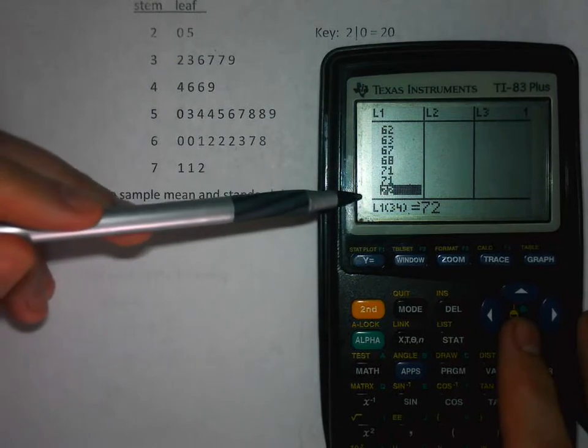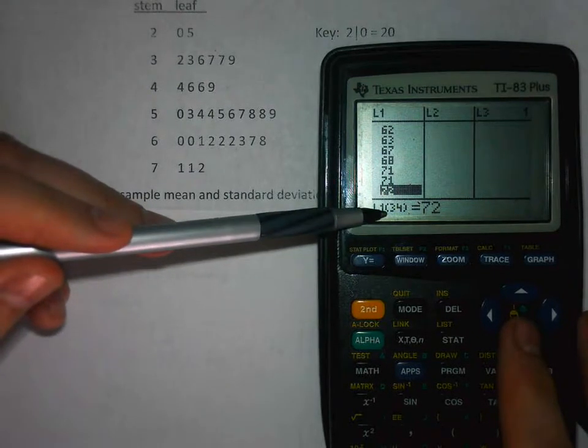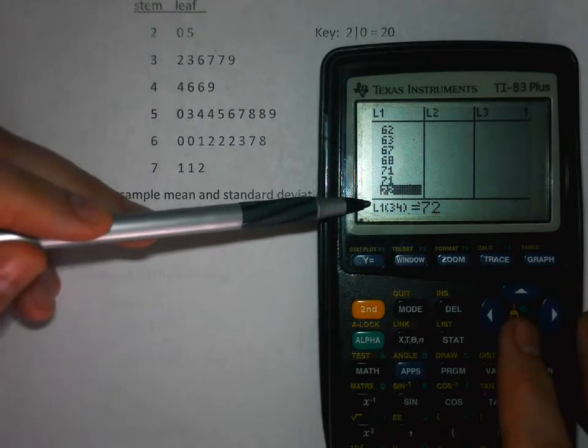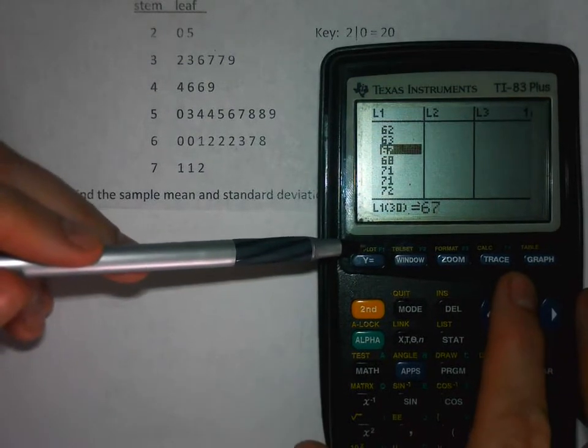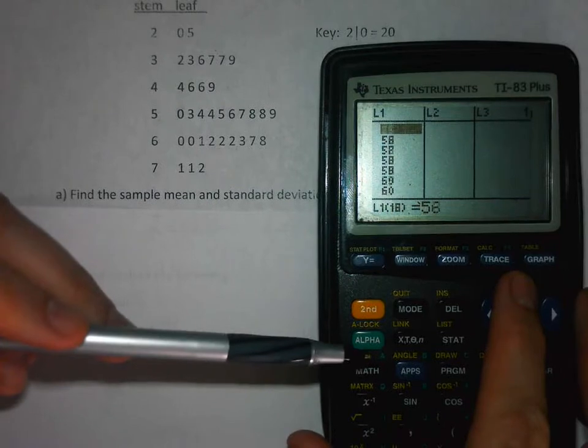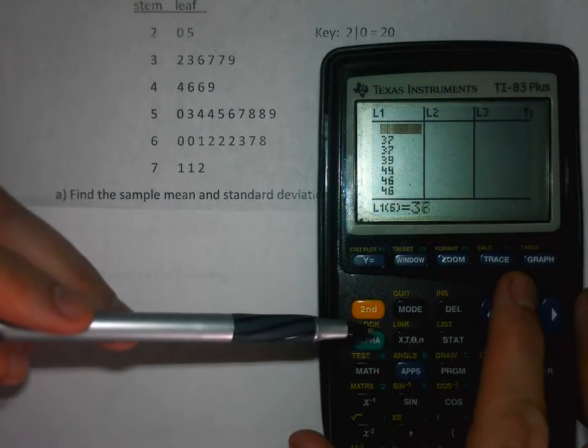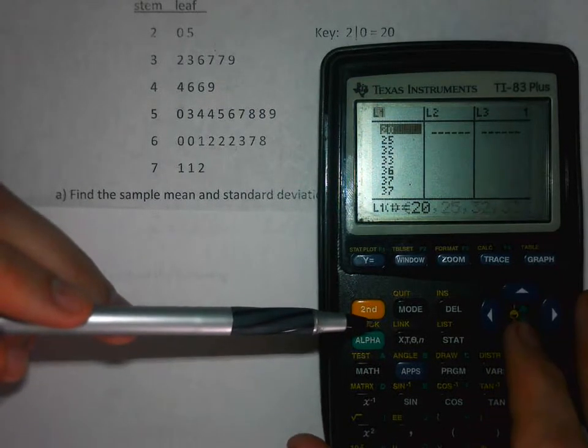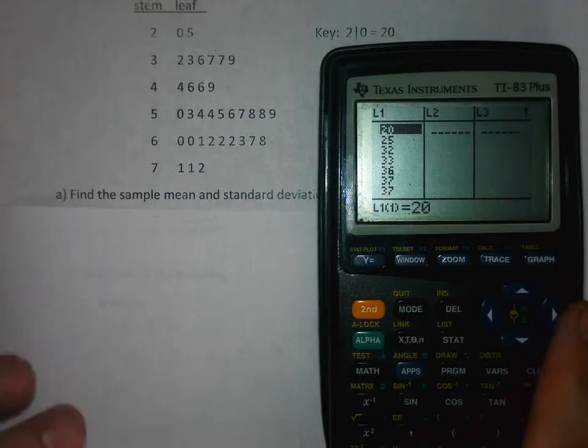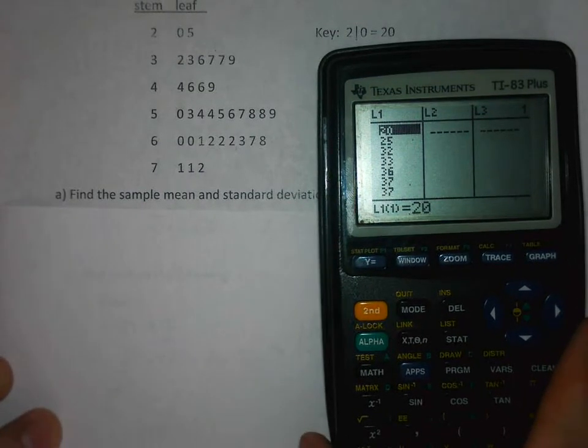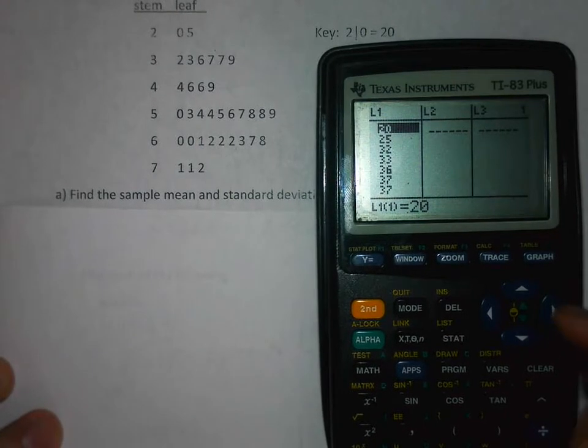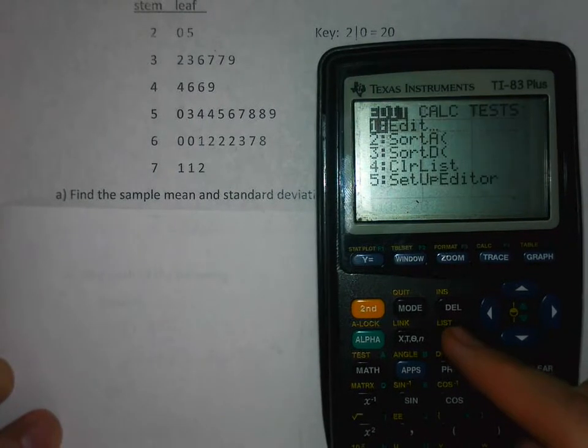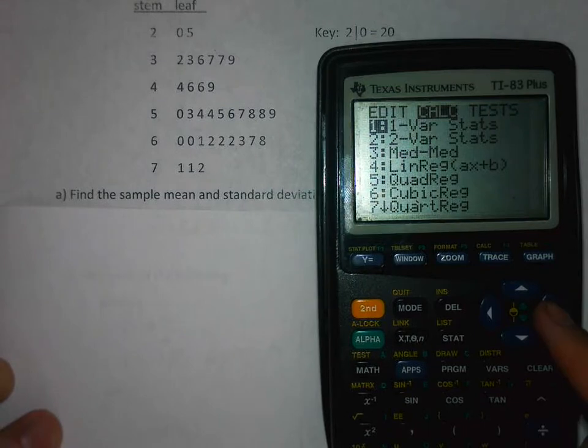If I go all the way down to the bottom, you'll notice that down here in the calculator it says L1 parentheses, and that number tells you the value you're at in your list. Notice that I entered them in order here, so 72 is the 34th number in list one. It is easy to make a mistake and miss one or enter one more than it should, so just be careful with that.